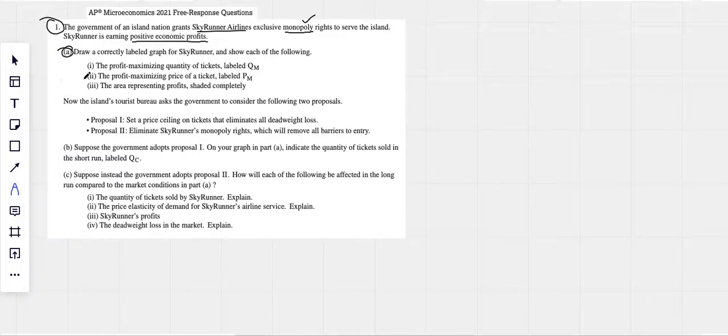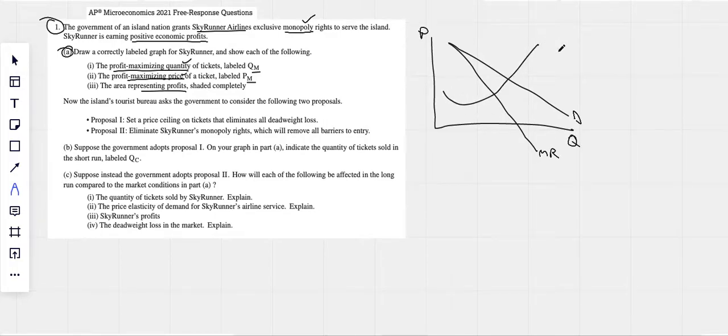Draw a correctly labeled graph for Skyrunner and show each of the following: profit maximizing quantity QM, profit maximizing price PM, and area of profit. So we're just drawing a monopoly graph here. Downward sloping demand, marginal revenue curve is under the demand curve. You always want to make your marginal revenue go negative here. Obviously price and quantity on the axes will have a marginal cost curve that looks a little bit like a Nike swoosh.